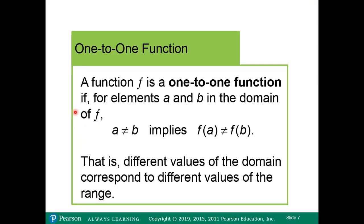Here's the definition: a function f is a one-to-one function if, for elements a and b in the domain of f, a equals b implies that f(a) does not equal f(b). Different values in the domain will correspond to different values in the range. That's a one-to-one function by definition.